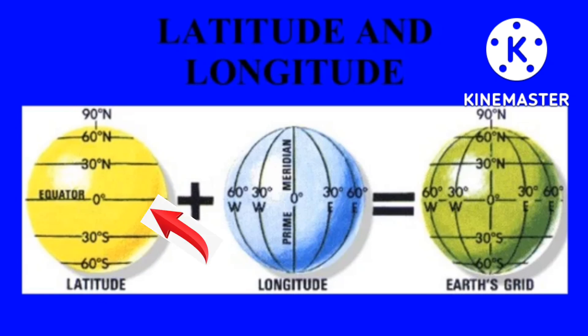Latitudes are horizontal lines that measure distance north or south of the equator. Longitudes are vertical lines that measure east or west of the meridian in Greenwich, England. Together, latitude and longitude enable cartographers, geographers and others to locate points or places on the globe.